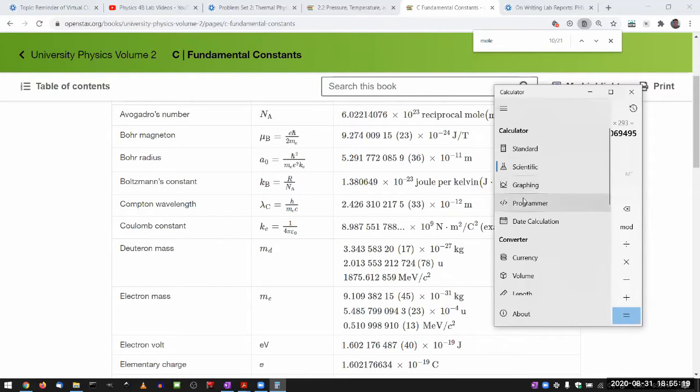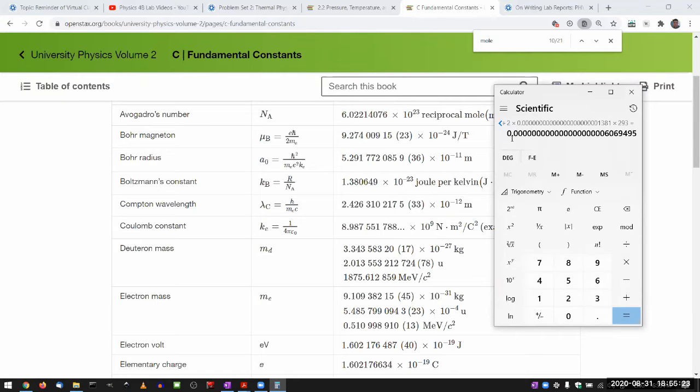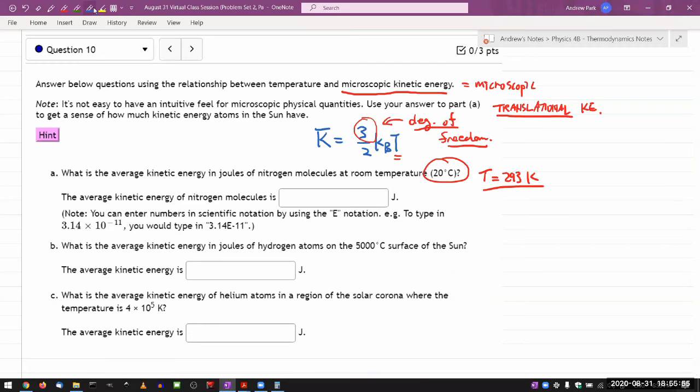I'm calculating on my calculator, three halves KBT. So 1.381 times 10 to the power of minus 23 times the temperature, which was 293 Kelvin. That gives me 6.07 times 10 to the minus 21 joules per molecule.